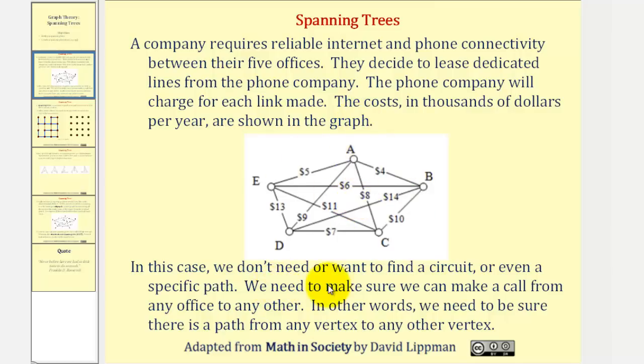In this case we don't need or want to find a circuit or even a specific path. We need to make sure we can make a call from any office to any other. In other words, we need to be sure there is a path from any vertex to any other vertex.